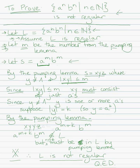Now since we know that the length of x, y is less than or equal to m, x, y must consist of just a's, because x, y is less than m and the first m characters are all a's. So since y isn't lambda and x, y is all a's, then y must be one or more a's. Let's suppose the length of y is k, so y equals a to the k — k a's in a row. By the pumping lemma, x, y, y, z should be an element of L. And x, y, y, z equals a to the m plus k, b to the m. A to the m plus k, b to the m isn't an element of L, but it must be in L by the pumping lemma. Therefore, we have a contradiction. Therefore, L is not regular, QED.